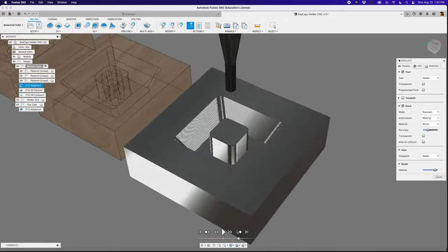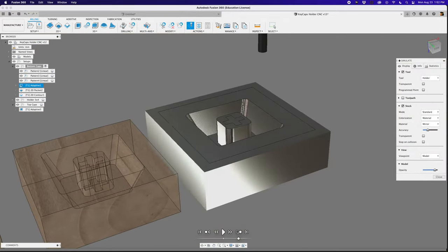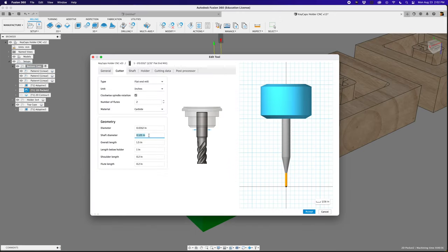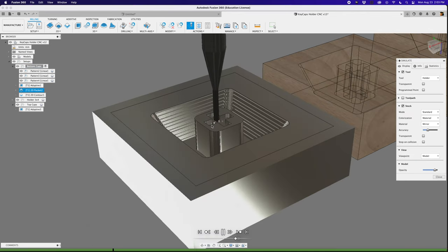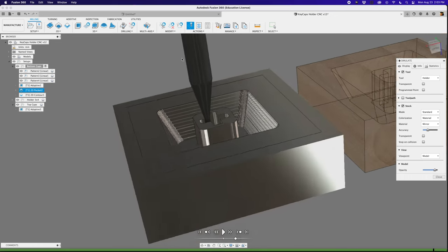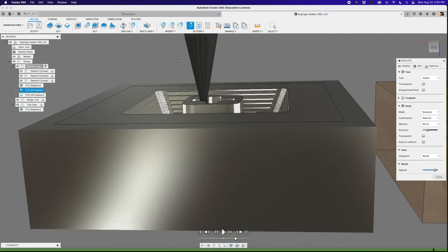For the next operation, I used a 1/32 inch flat end mill with a 0.2 inch cutting length so that I can actually reach all the way down the stem. I used a 2D pocket with a maximum step down of just 0.2 millimeters, so it's easy on the tool and material.